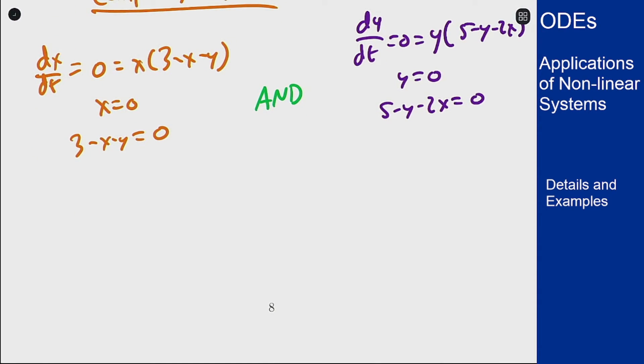So from this we see that our equilibrium solutions here are at 0 comma 0. We have 0 for x which means y is 5. If we have 0 for y that means x is 3.